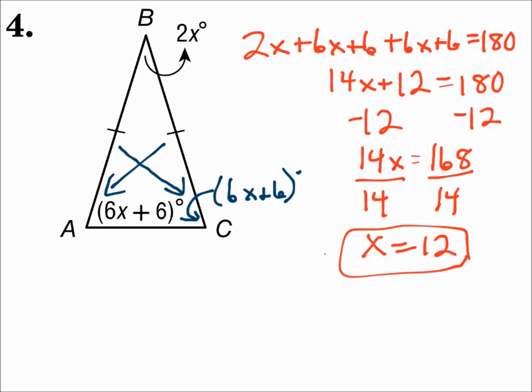So in a triangle, when two sides are congruent, their opposite angles are congruent. And when two angles are congruent, their opposite sides are congruent.